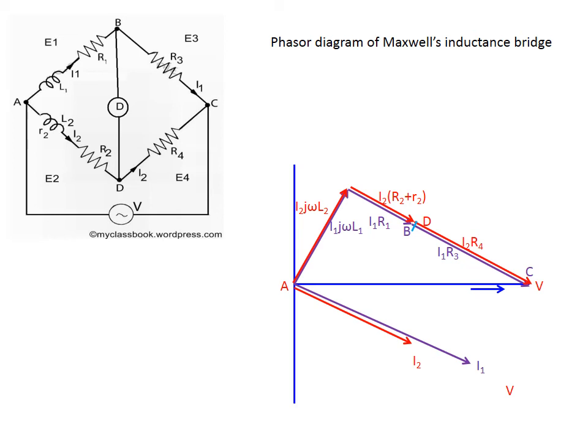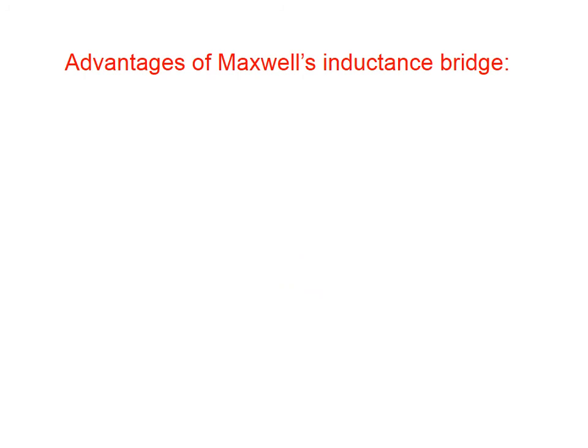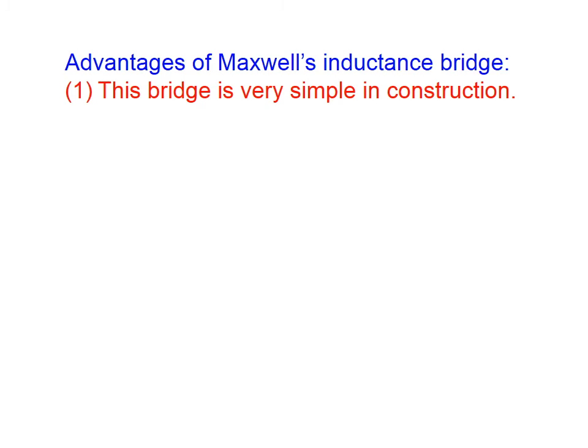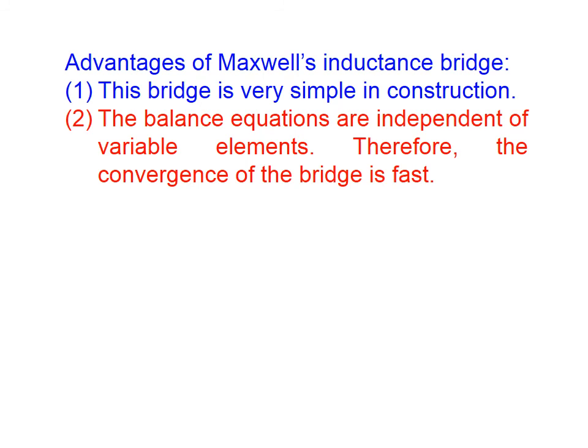Now let us discuss the advantages of Maxwell's Inductance Bridge. This bridge is very simple in construction. The balance equations are independent of the variable elements L2 and R2, and therefore the convergence of this bridge is very fast. This bridge is suitable for the measurement of inductance and resistance of a coil having low Q.